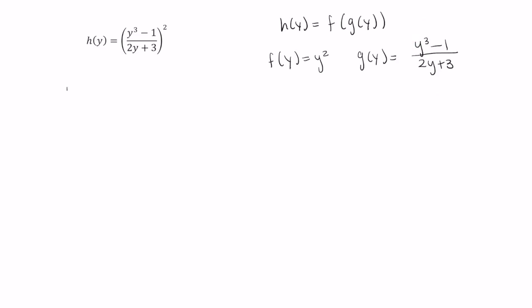So let's begin. h prime of y is equal to the derivative of the outer function. So if I were to ignore all this, I could just apply the power rule, move this 2 to the front, and subtract 1 from this exponent. So this is 2 times, and inside I'm going to write this entire inner function. We're going to leave this inner function intact.